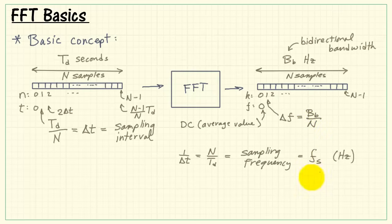It turns out that the bidirectional bandwidth and the sampling frequency are one and the same. b sub lowercase b is the same thing as sampling frequency f sub s. I'll slip that in here. f sub s divided by n would be our bin width in frequency.